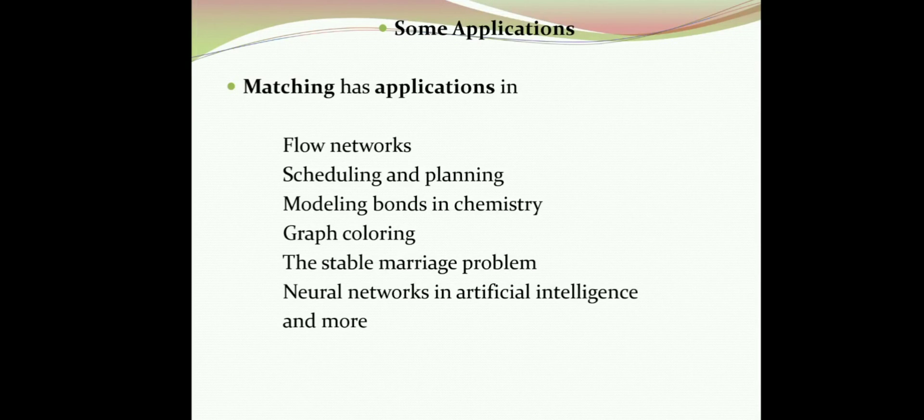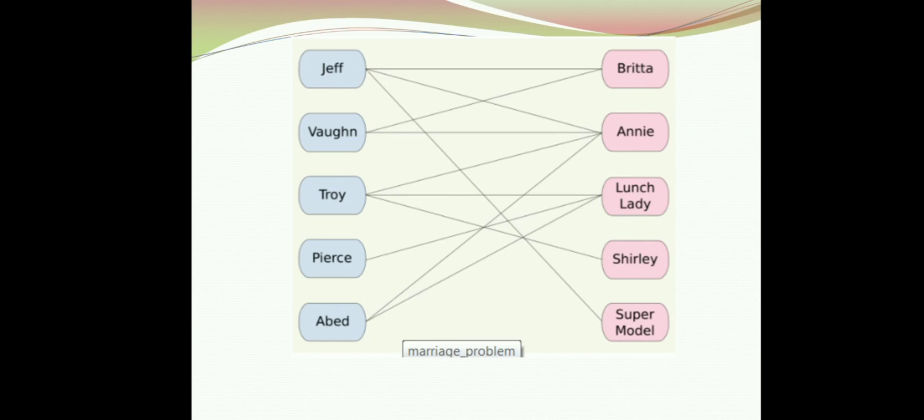Let us see some of the applications of matching. Matching has applications in flow networks, scheduling and planning, modeling bonds in chemistry, graph coloring, the stable marriage problem, neural networks in artificial intelligence, and more. This is an example of the application of system of distinct representatives in matching, where we have a set of boys who each have several girlfriends. Under what conditions can we find a perfect matching? This is one of the application and we call it the marriage problem.